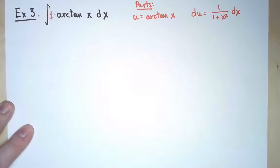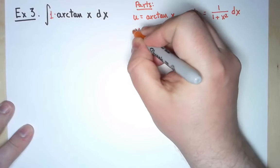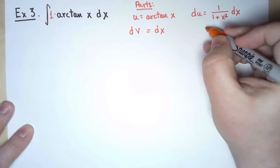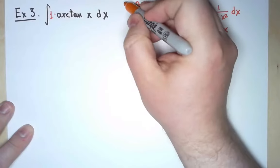If this is u, then dv must be the rest. And therefore, v will be equal to x. I introduce an extra x.